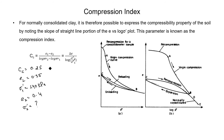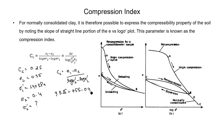Applying the formula CC = (e1 minus e2) divided by (log σ2' minus log σ1'), and putting in all the values — CC = 0.25, e1 = 0.55, e2 = 0.4, and σ1' = 140 kilopascal — when we solve this equation we get σ2' = 557.2 kilopascal.